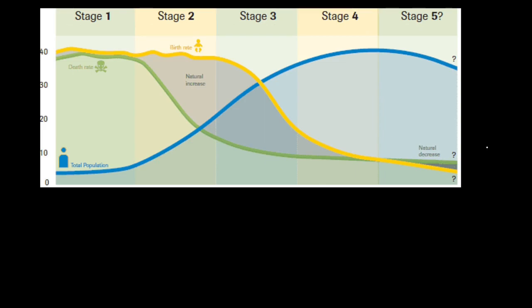There are five stages in the Epidemiological Transition Model. The ETM is describing the causes of deaths and diseases in countries, and explains it using the same graph. Stage one is pestilence and famine. We can see famine — people have lack of access to food, they're going to die. We also see war as a common cause of death. Stage one of the Demographic Transition Model was the Thirteen Colonies, and there was a lot of war going on: the French and Indian War, the Revolutionary War, the War of 1812.